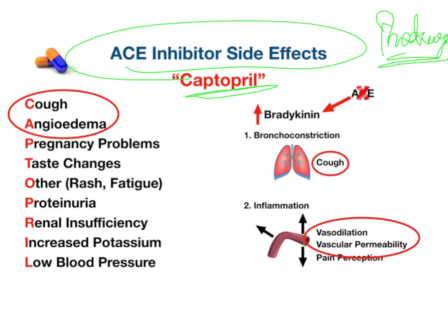The side effects of captopril - which serves as the mnemonic - are: cough, angioedema, pregnancy problems, taste changes, and others such as rash, fatigue, proteinuria, renal insufficiency, increased potassium, and lower blood pressure. These are the important side effects of ACE inhibitors, and this is one of the easiest ways to remember them.